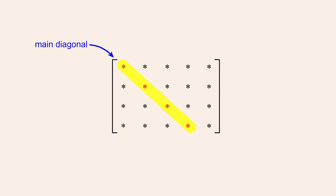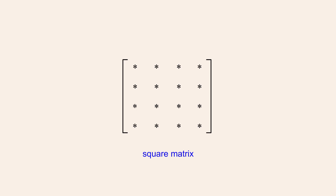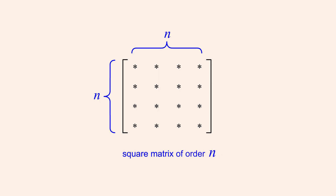The main diagonal of a matrix is composed of all the entries whose row and column numbers are the same. One special type of matrix is a square matrix. Square matrices have an equal number of rows and columns. If the number of rows and columns in a square matrix is n, we say that the square matrix is of order n. For example, this square matrix is of order 4.